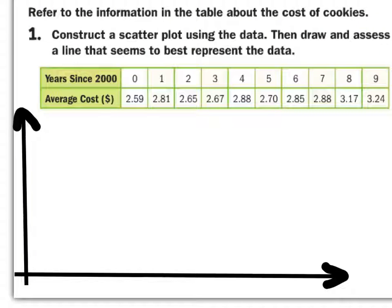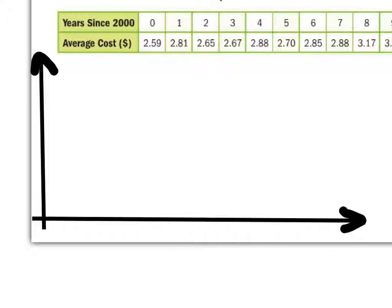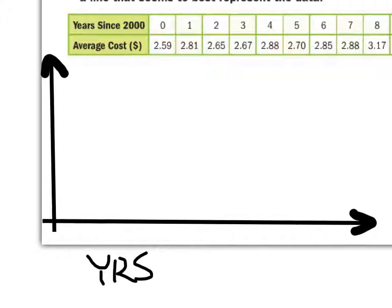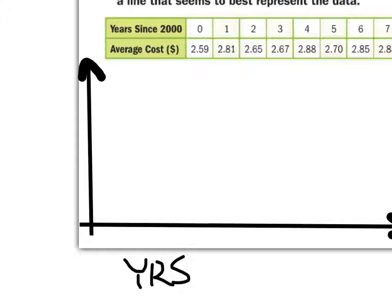We've got our X up and count. What is the label for the X-axis? Dawson. Years. How do you know it's years? Because it's time. Very good. What's the label for the Y-axis then? Average cost. Very good.